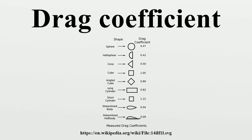For a streamlined body to achieve a low drag coefficient, the boundary layer around the body must remain attached to the surface of the body for as long as possible, causing the wake to be narrow. A high form drag results in a broad wake. The boundary layer will transition from laminar to turbulent provided the Reynolds number of the flow around the body is high enough. Larger velocities, larger objects, and lower viscosities contribute to larger Reynolds numbers.